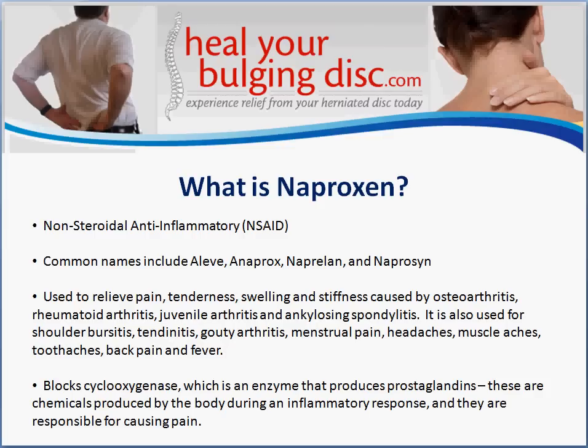The use for naproxen is that it's used to relieve pain, tenderness, swelling, and stiffness caused by osteoarthritis, rheumatoid arthritis, juvenile arthritis, and ankylosing spondylitis — which is basically another form of arthritis where the ligaments in the front or back of the spine develop calcium deposits and eventually fuse the spine together. It's also used for shoulder bursitis, tendonitis, gouty arthritis, menstrual pain, headaches, muscle aches, toothaches, back pain, and fever.